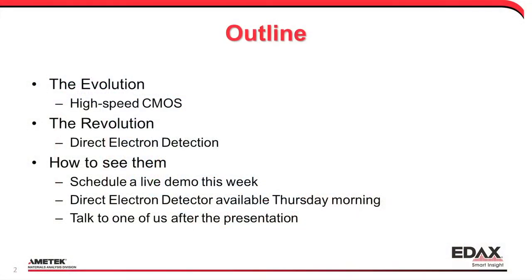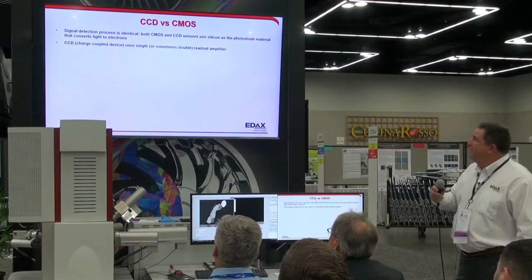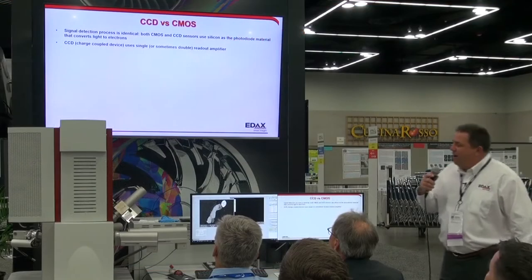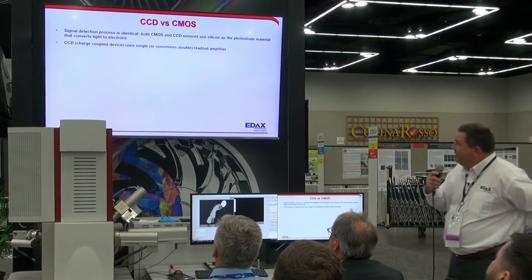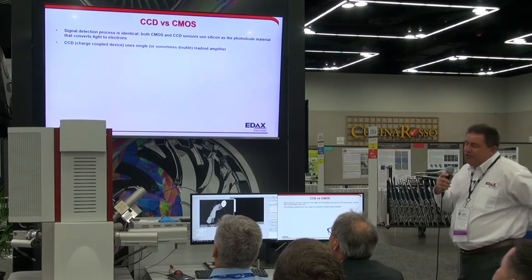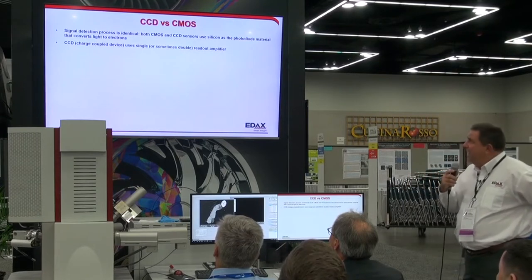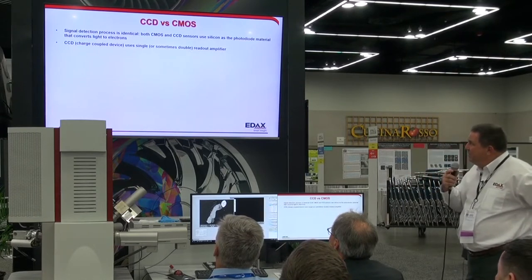On the evolution part, I'm going to be talking about the Velocity camera, which is our high-speed CMOS camera. Then Rene will be following up with the direct electron detector camera, our Clarity camera, to talk about CMOS and how it compares to traditional CCD technology.